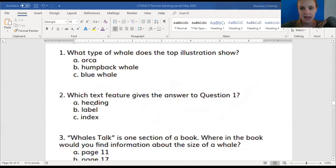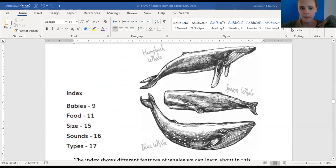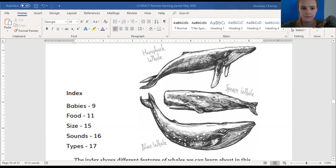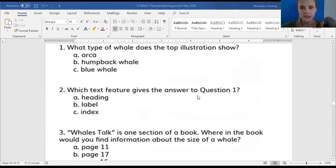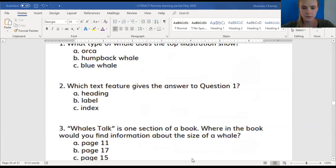What text feature did I use to figure out what the whale was called? It's not this one. And it's not this one. It's these over here. So let's figure out what this answer is. Is it A, heading, B, label, or C, index? What did you use to figure out what this whale was? Heading, label, or index? Mark your answers now. Cross out the ones that you know are not right. Very good.